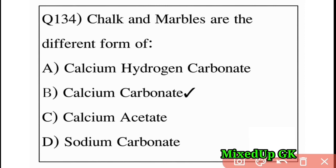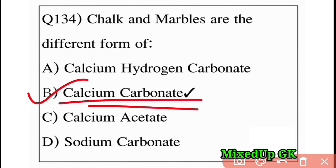Next question: chalk and marble are different forms of what? Option A: calcium hydrogen carbonate, Option B: calcium carbonate, Option C: calcium acetate, Option D: sodium carbonate. The answer is Option B: calcium carbonate.